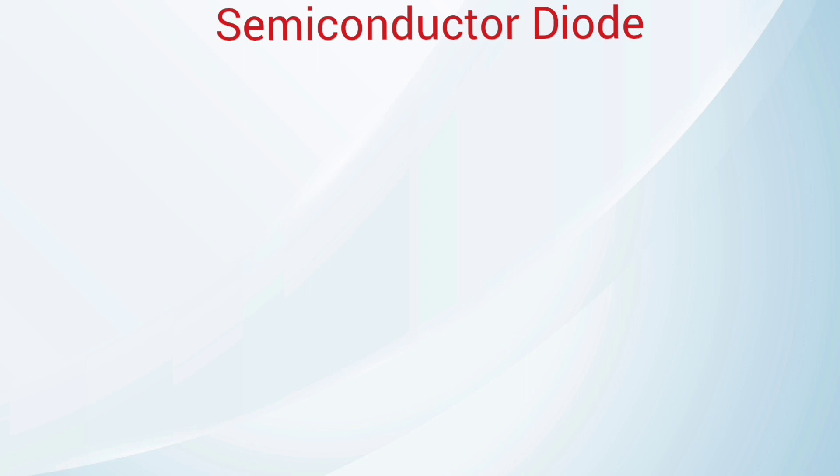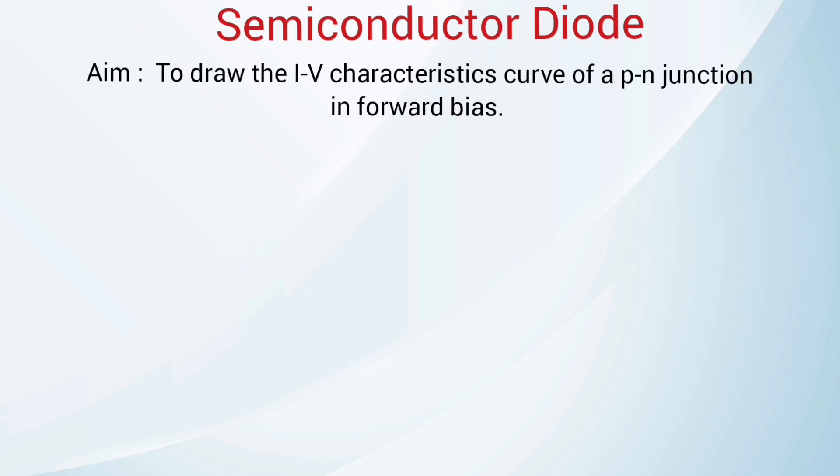Semiconductor Diode. The aim of the experiment is to draw the current-voltage characteristics curve of a P-N junction in forward bias.